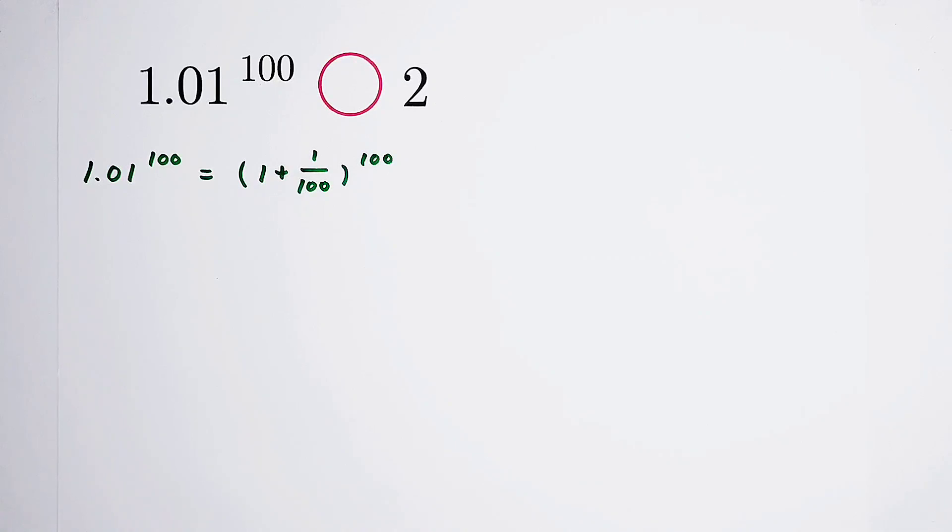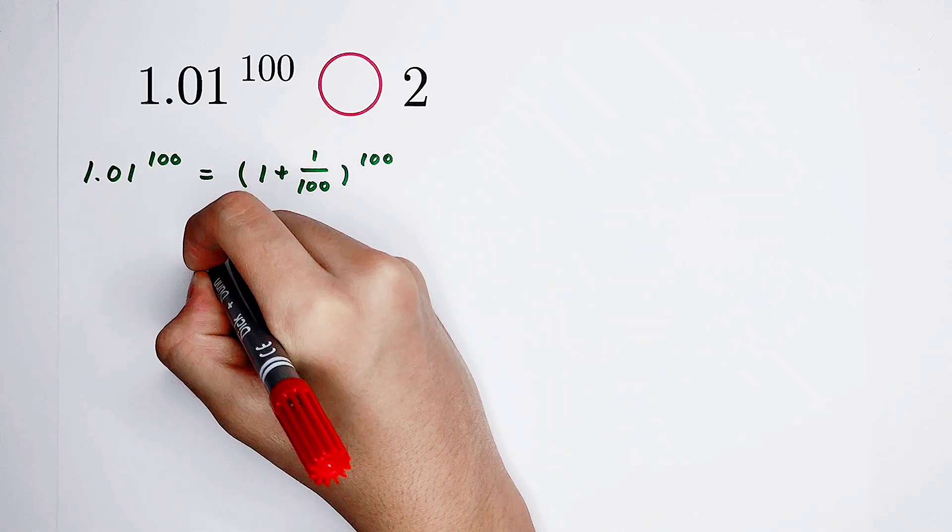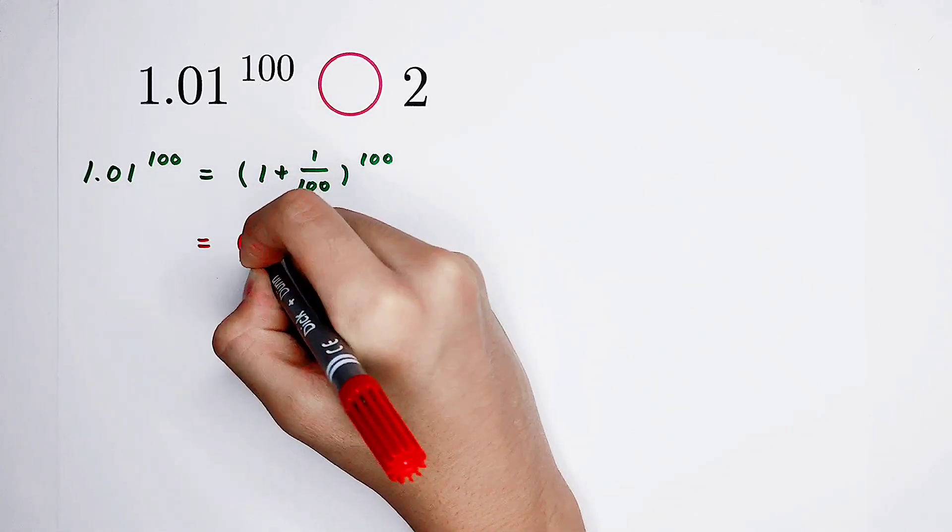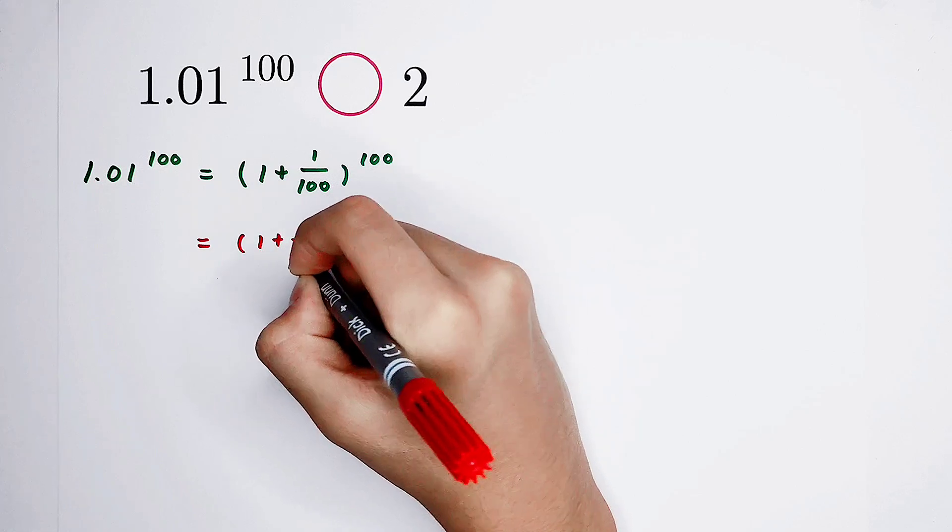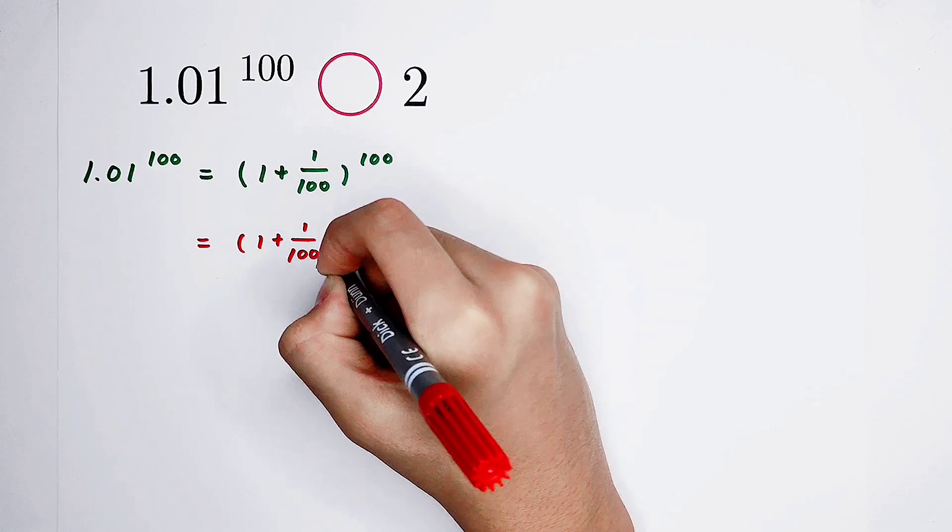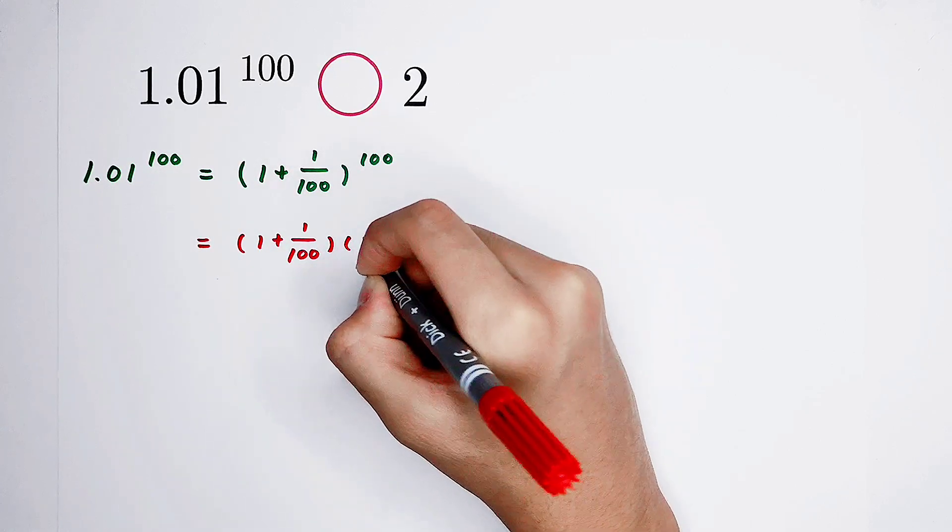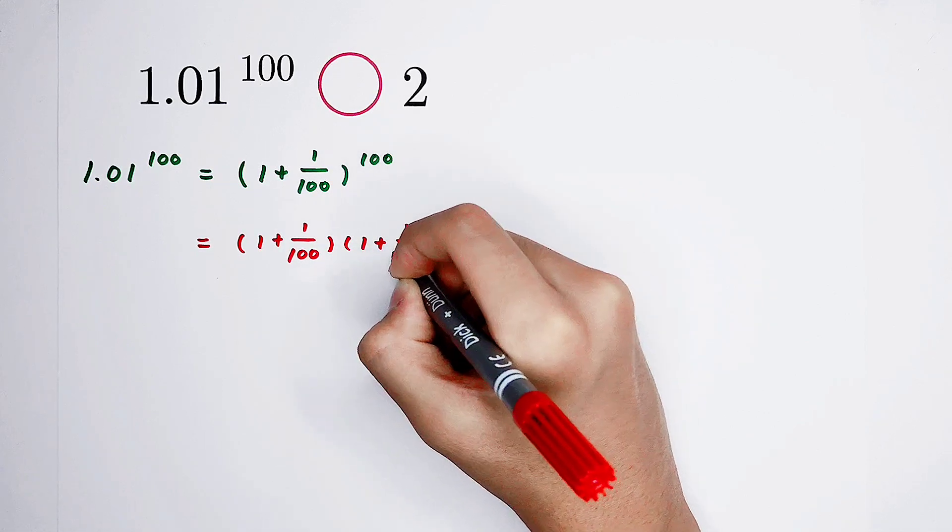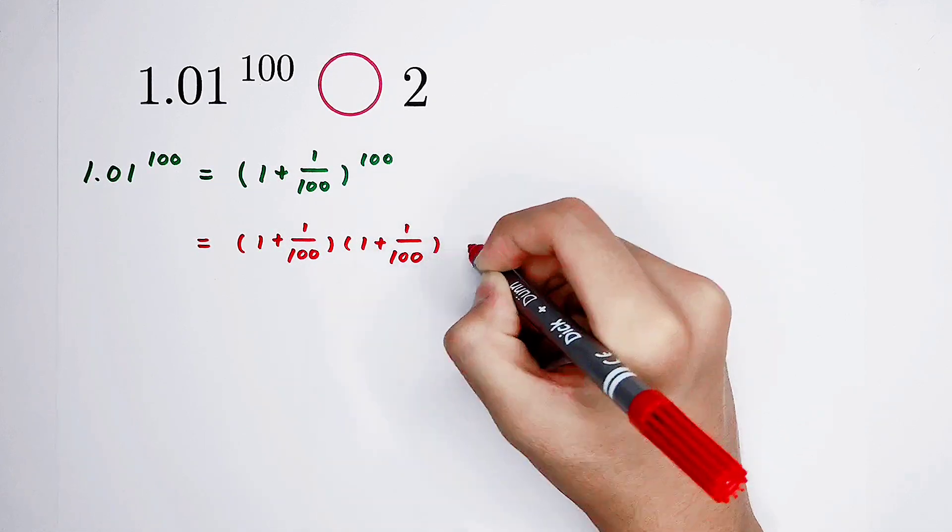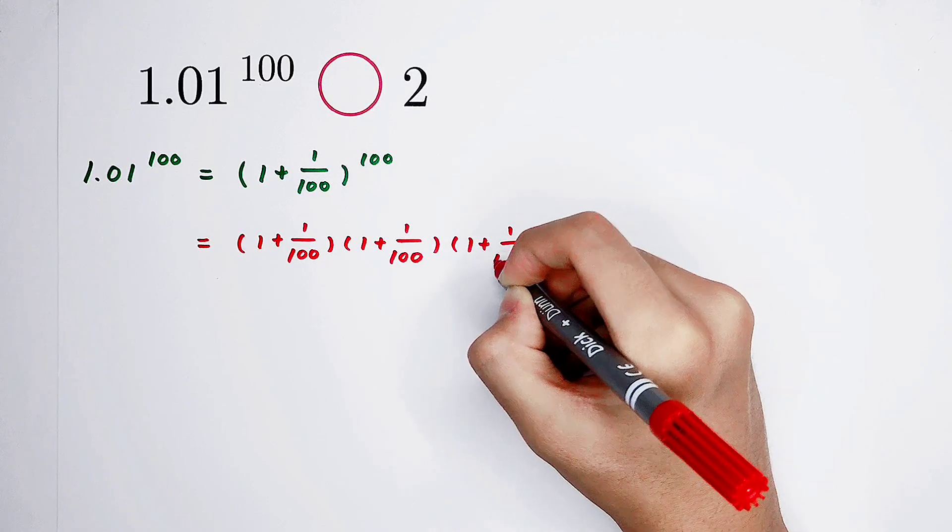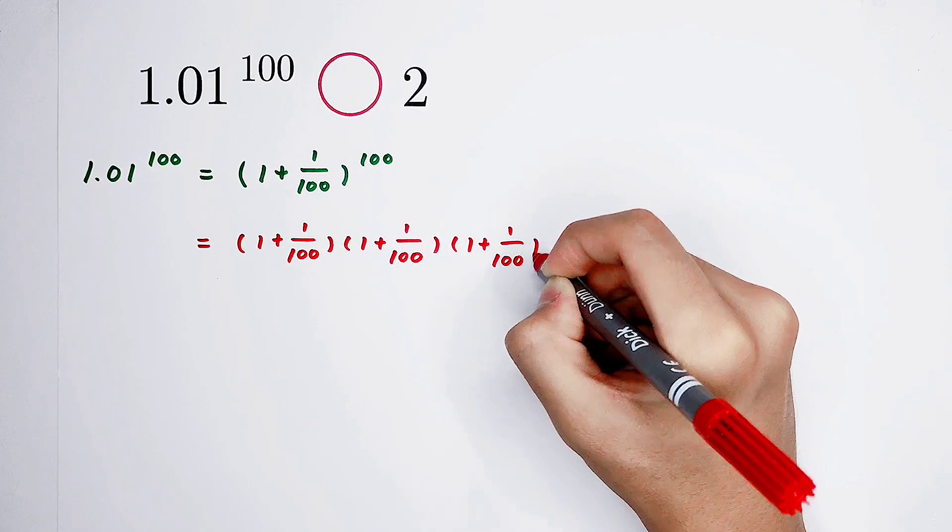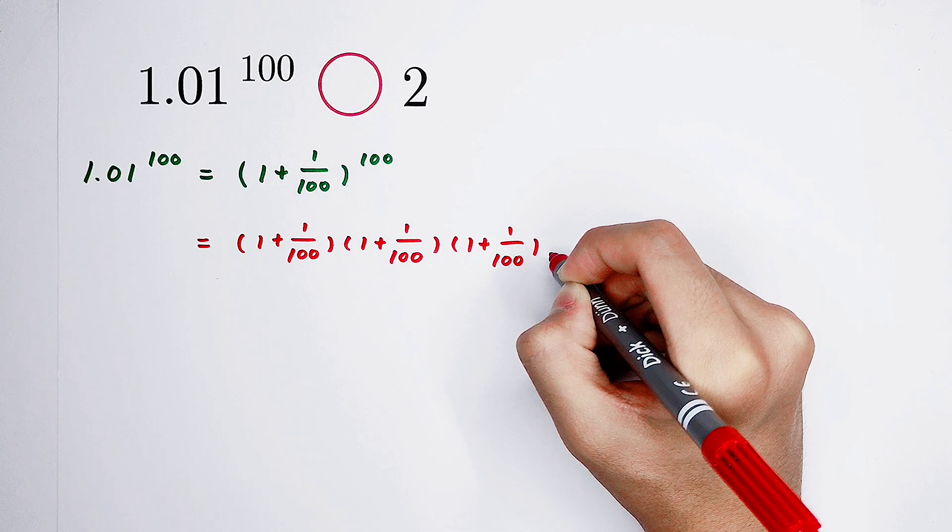Then, the next step, what shall we do? Do this. 100 factors, okay? Write them down. No, not all of them, some of them, okay? Then, you can think about what we're gonna do next.